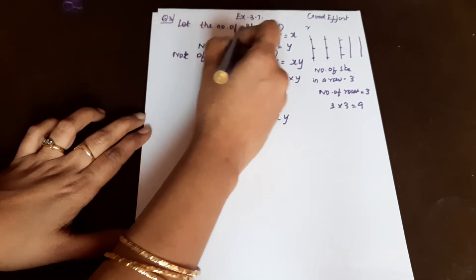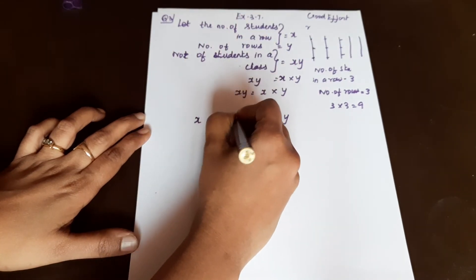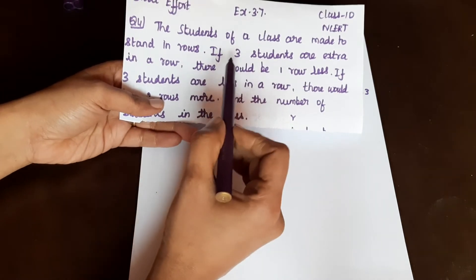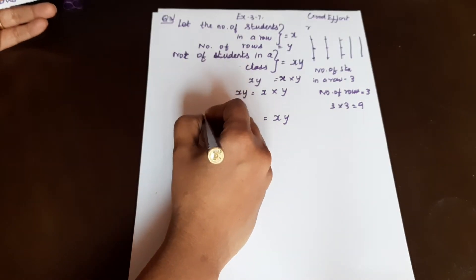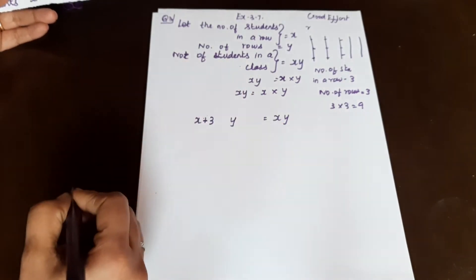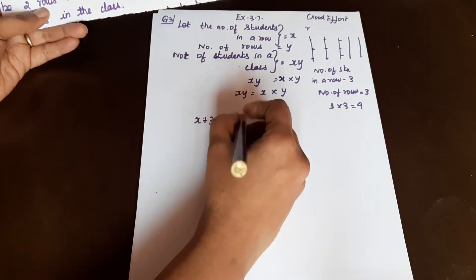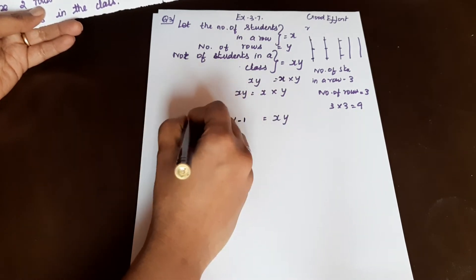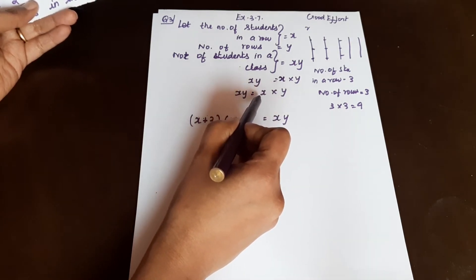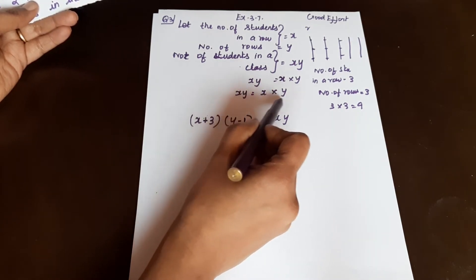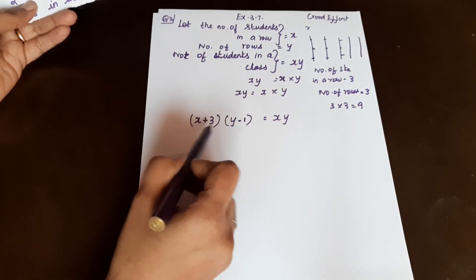Number of students in a row is X, number of rows is Y. Now the question says: if 3 students are extra in a row, students in a row becomes X plus 3. There would be 1 row less, so number of rows becomes Y minus 1. We multiply these to get total students.